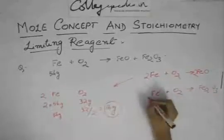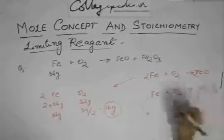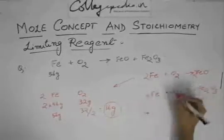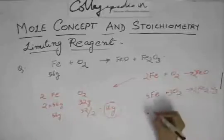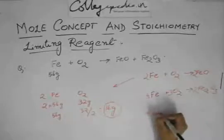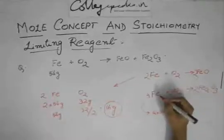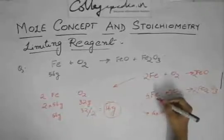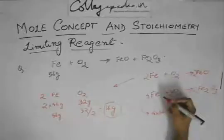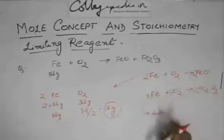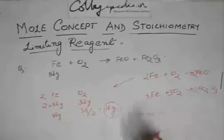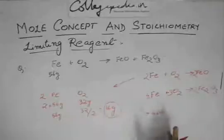And in this reaction, the balancing would be 4Fe plus 3O2 gives 2Fe2O3. So here 4 times 56, I hope you know that iron's atomic weight is 56. You need to know these common atomic weights, because they do not really give you the atomic weights as such.